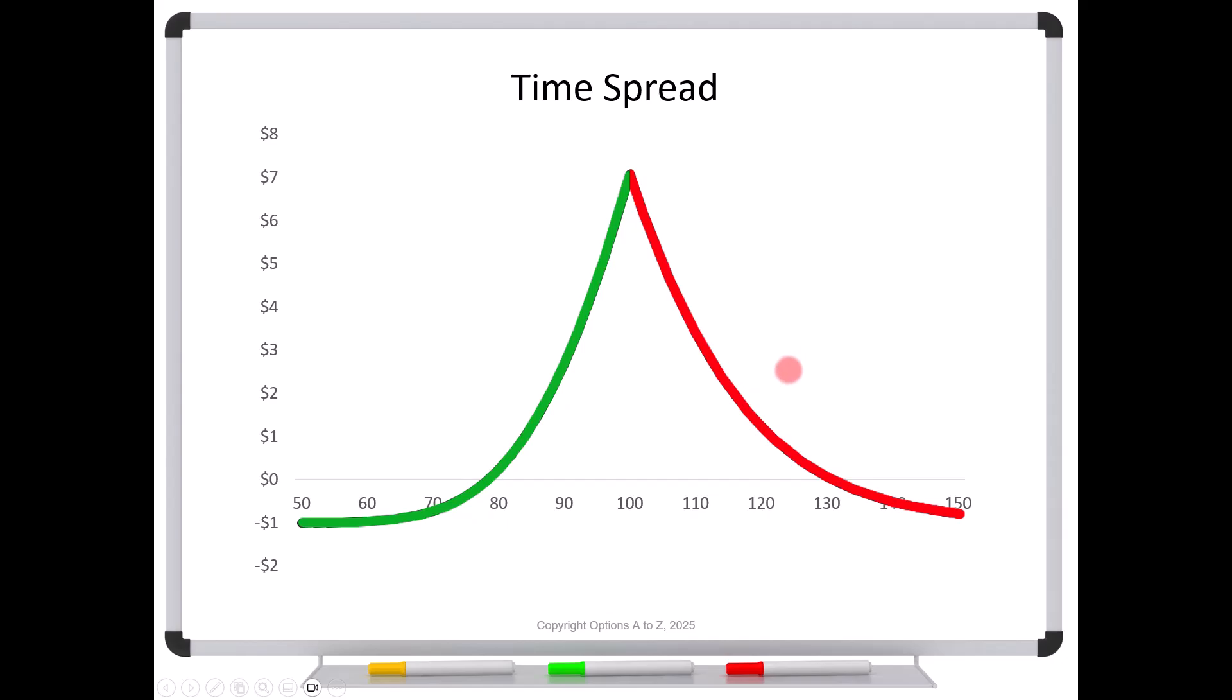It's only at expiration where the lines become straight. But see, the problem here is we have two expiration dates. So we can't really say we're at expiration for the entire strategy. Instead, we can just say we're at expiration of the, in this case, the short dated option.